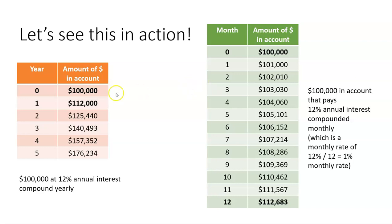Let's see this in action. We know that in one year at 12% interest, if you do the interest once, you'll get $12,000 and have $112,000 at the end of one year. But if we compound every month, we take our 12% annual rate and divide it by 12 to get a 1% monthly rate. So every month we get 1% compound interest. When you go the whole way through, at the end of the year you have $112,683 — that's $683 more than compounding once a year. Monthly interest helps you out whether you're saving or lending money.